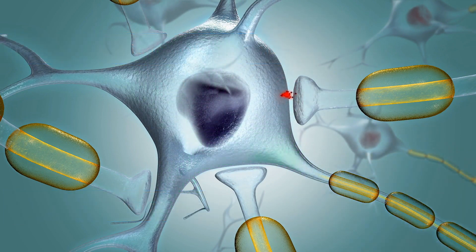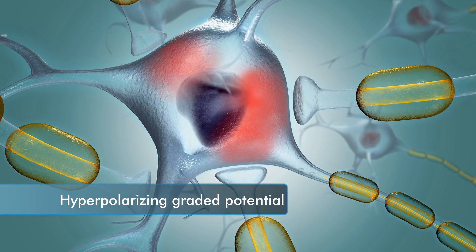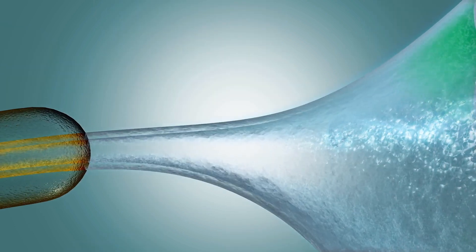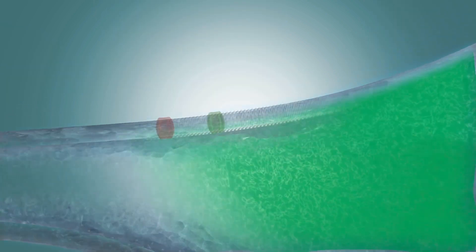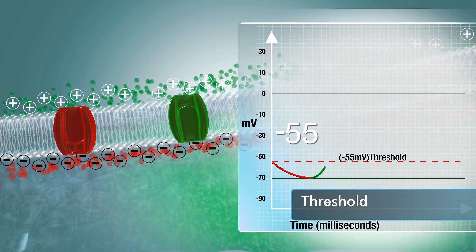If there are more hyperpolarizing graded potentials than depolarizing, the net membrane potential in the trigger zone becomes even more negative than the resting potential. This would temporarily inhibit the generation of an action potential or require additional positive stimulation to reach threshold. When the net graded potentials arriving at the axon hillock reach threshold, the action potential begins.